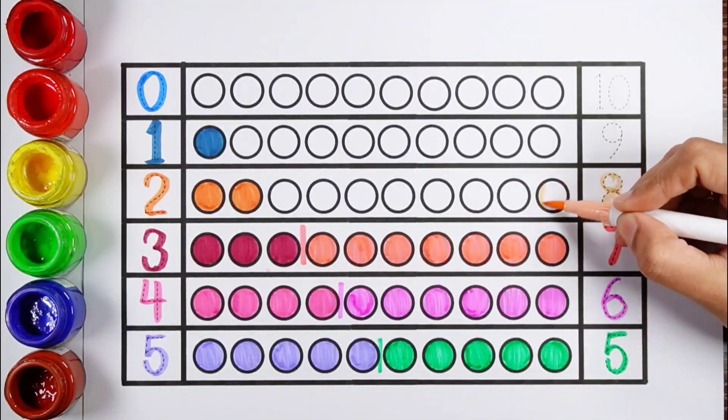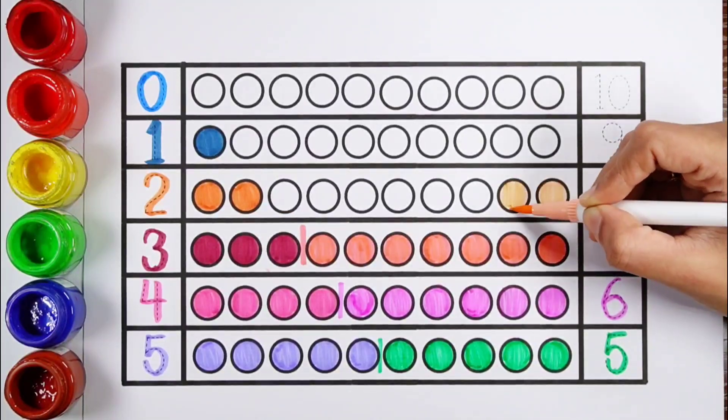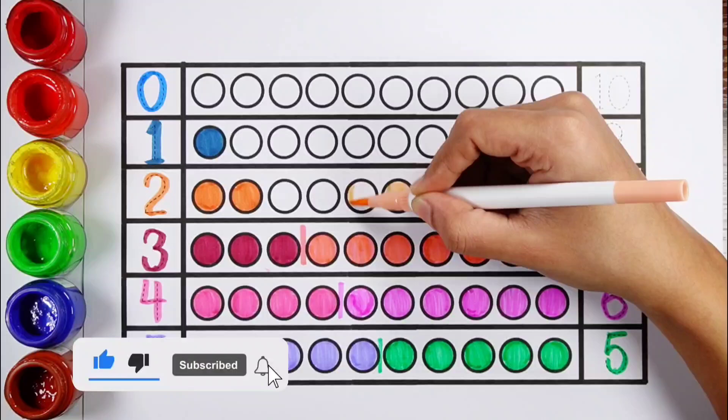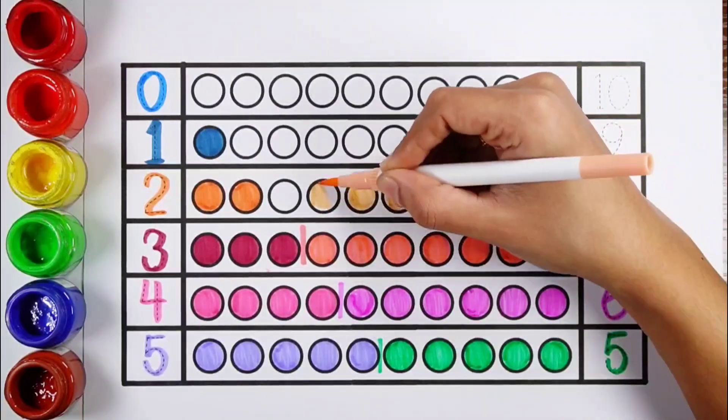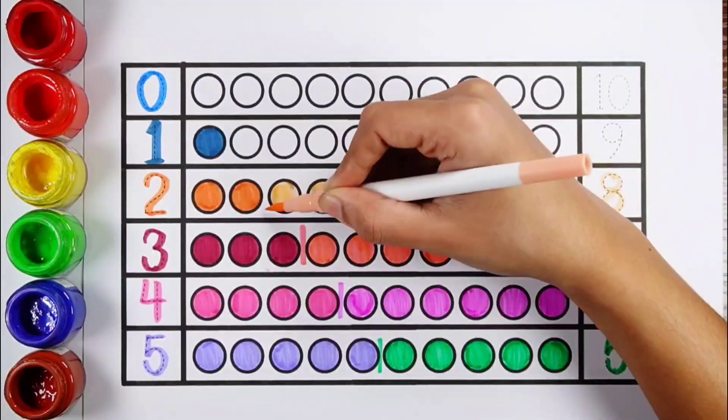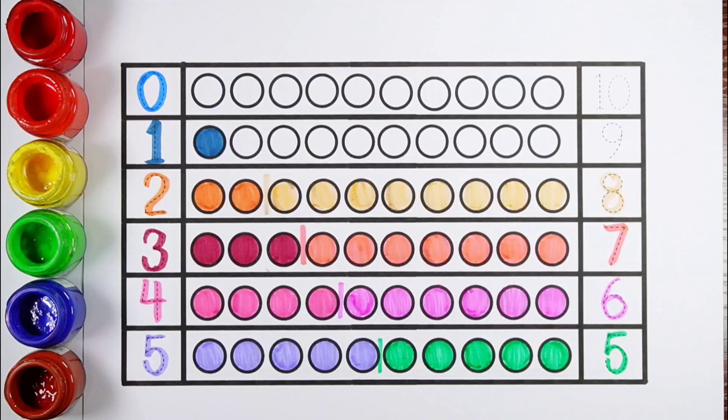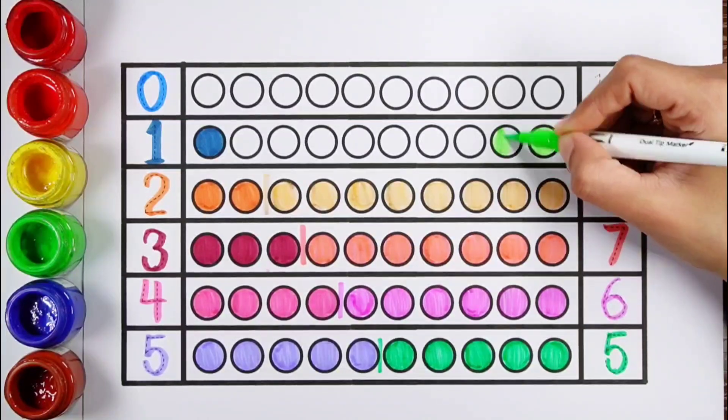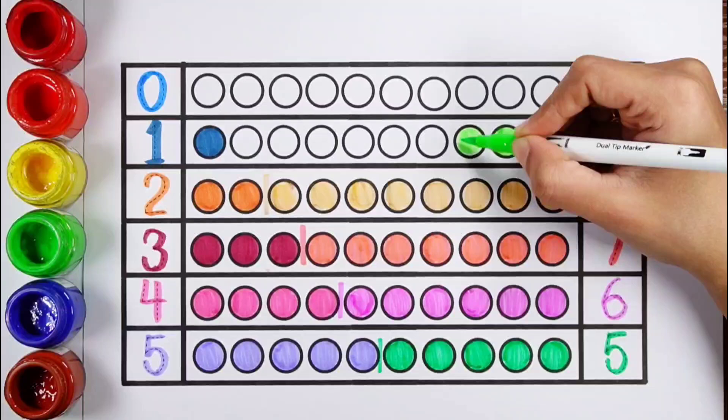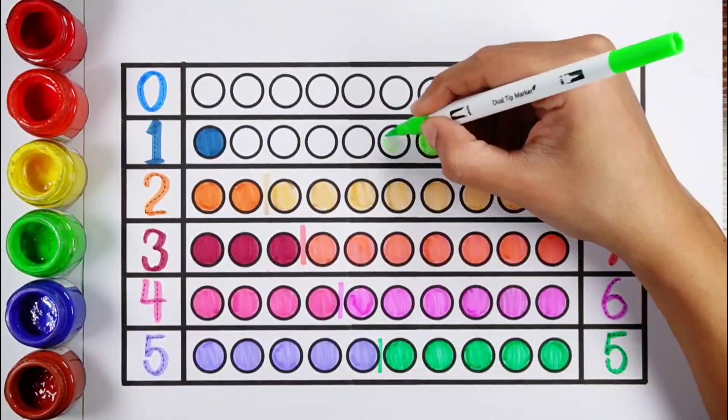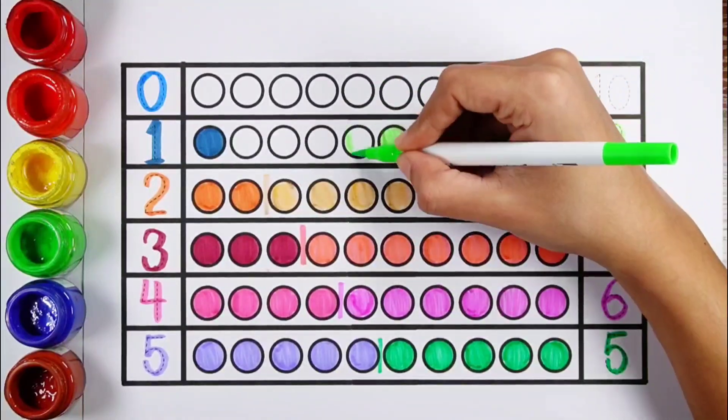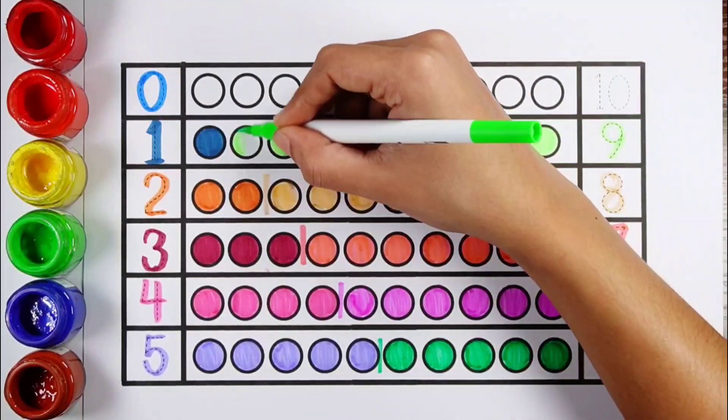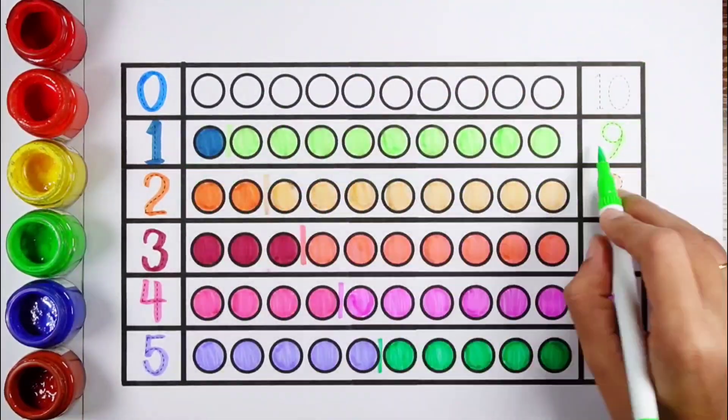Number 8. 1, 2, 3, 4, 5, 6, 7, 8. 8 balls. 2 plus 8 makes 10. Number 9. 1, 2, 3, 4, 5, 6, 7, 8, 9. 9 balls. 1 plus 9 makes 10.